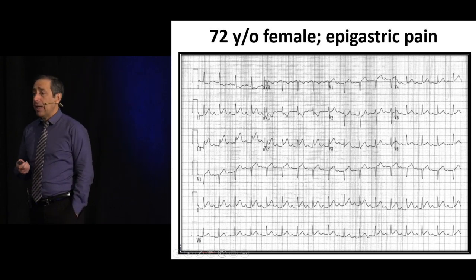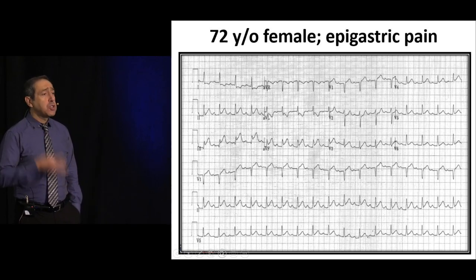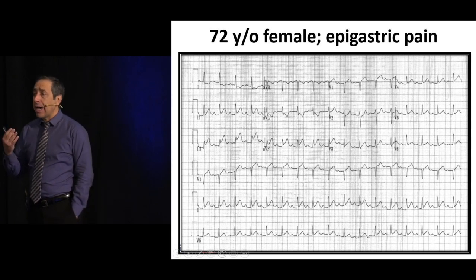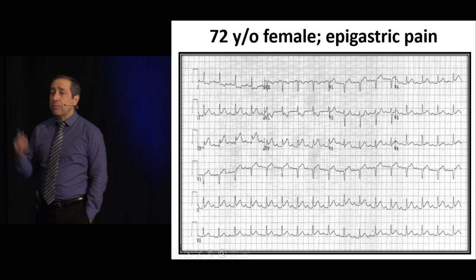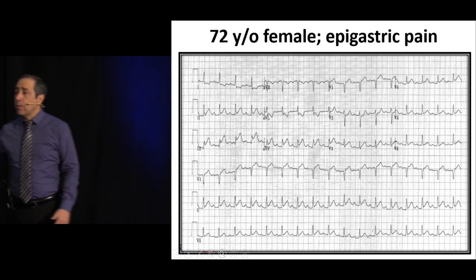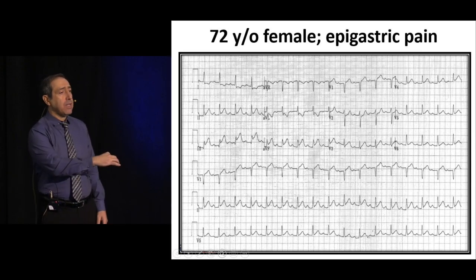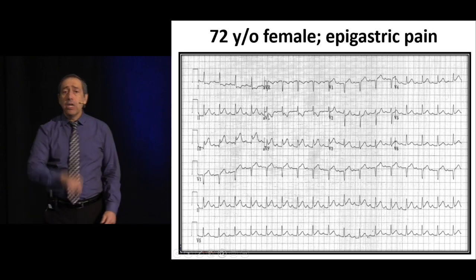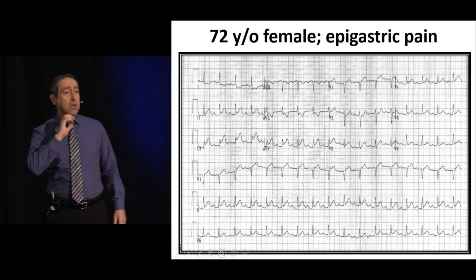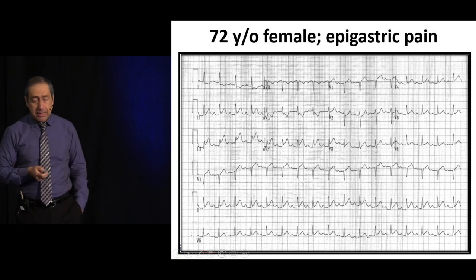Remember, the right side will only be involved if the clot is before the bifurcation. If you have right-sided features, you very likely also have posterior involvement because the clot is high. However, 20% of the population have their posterior descending artery coming from the circumflex, so it's not a 100% rule. In that 20%, the posterior descending artery comes from the circumflex, which comes from the left side and goes back.